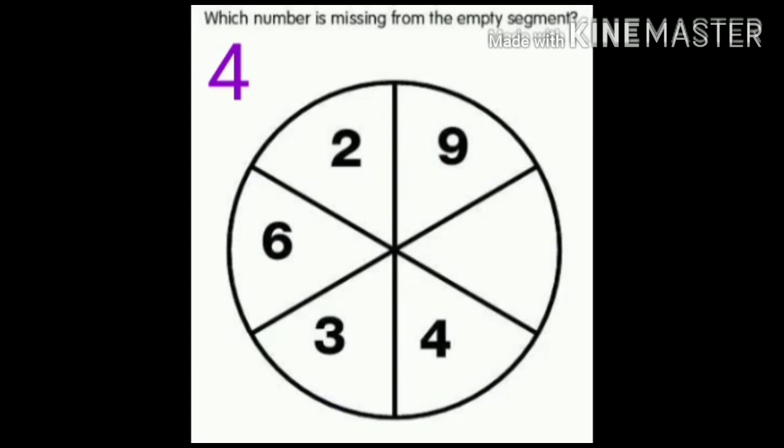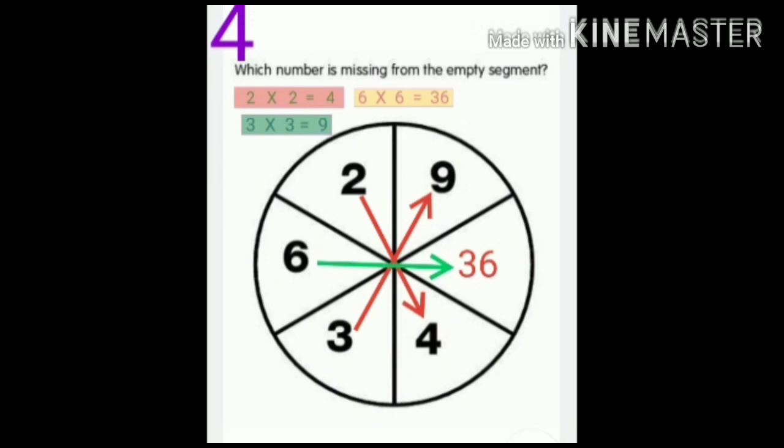Number 4: Which number is missing from the segment? 2 multiplied by itself, we get the answer 4. 3 multiplied by itself, we get the answer 9. So, 6 will be also multiplied by itself, and we get the answer 36.